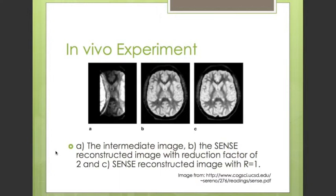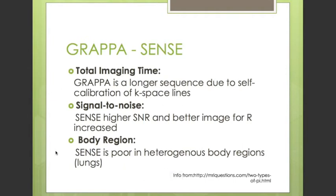GRAPPA is a k-space-based parallel MRI method and SENSE is an image-domain parallel MRI method. They can be compared on numerous criteria. The first criterion is total imaging time: GRAPPA is known to take longer than SENSE for calibration of k-space lines, while SENSE may integrate calibration into the pulse sequence itself. The second criterion is SNR: SNR appears similar when reduction factor is 2, but as the reduction factor increases, SNR shows an improvement in SENSE. However, GRAPPA is more advantageous in heterogeneous body parts because SENSE's coil sensitivity mapping is affected by susceptibility changes, such as between air and tissue, making it worse for imaging the lungs.